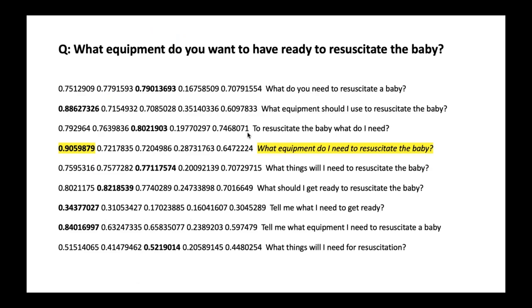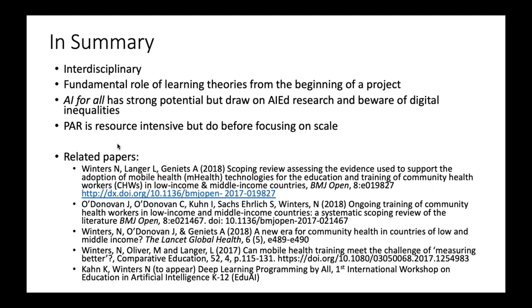Without going into the algorithm detail, in bold yellow you see the ranking of how we recognize each of those questions. 'What equipment do I need to resuscitate the baby' is ranked most similar to the target question. Further down, 'tell me what I need to get ready' scores only 0.34, so the system won't recognize that as a good enough match. This is one example of what we're working towards — recognizing naturalistic interactions in virtual reality spaces to provide appropriate, time-sensitive feedback to the learner.